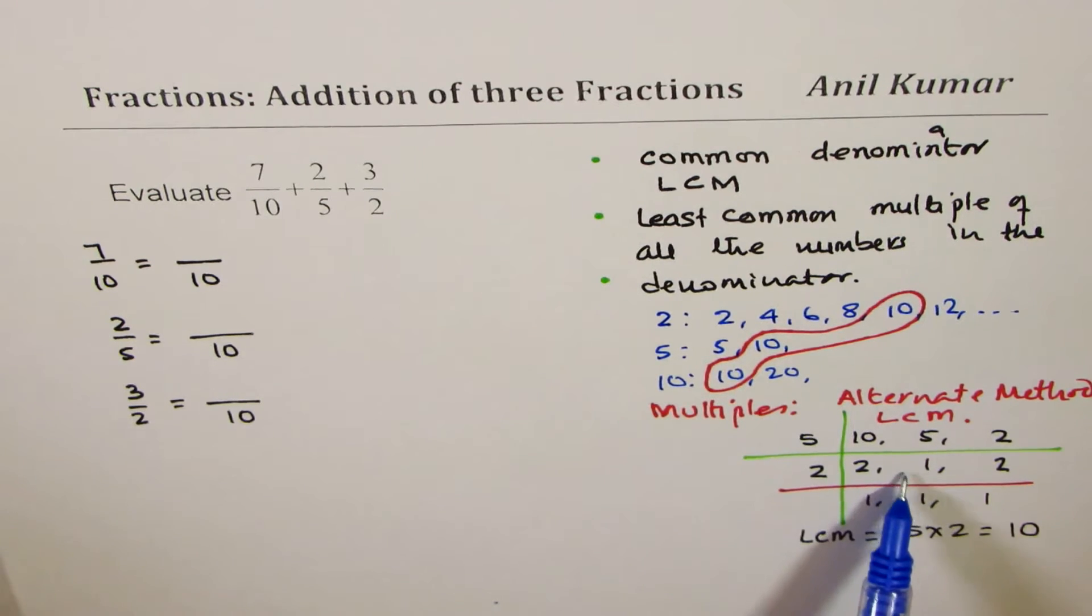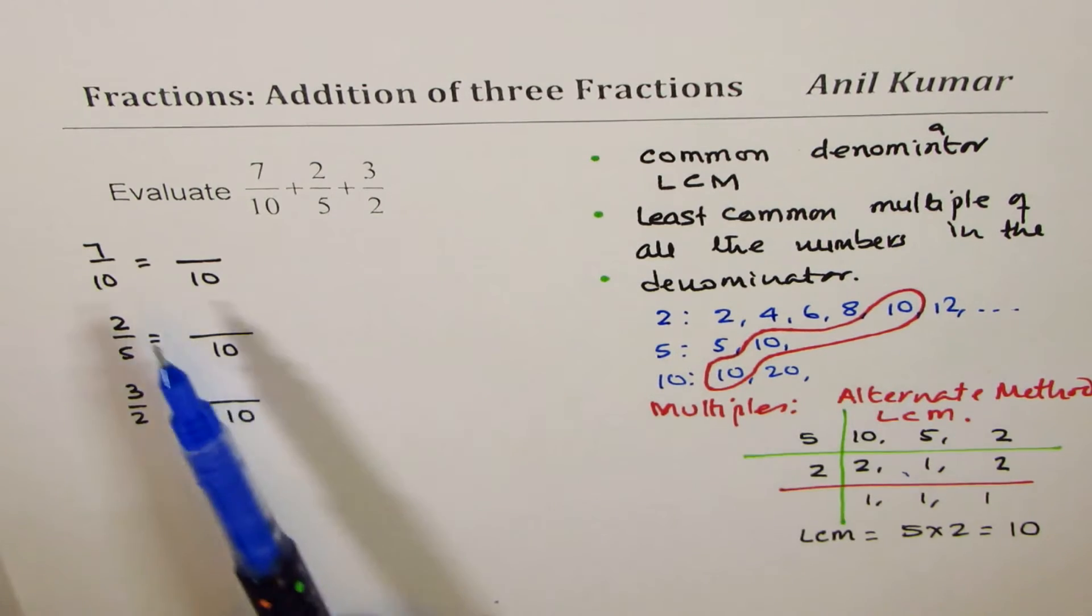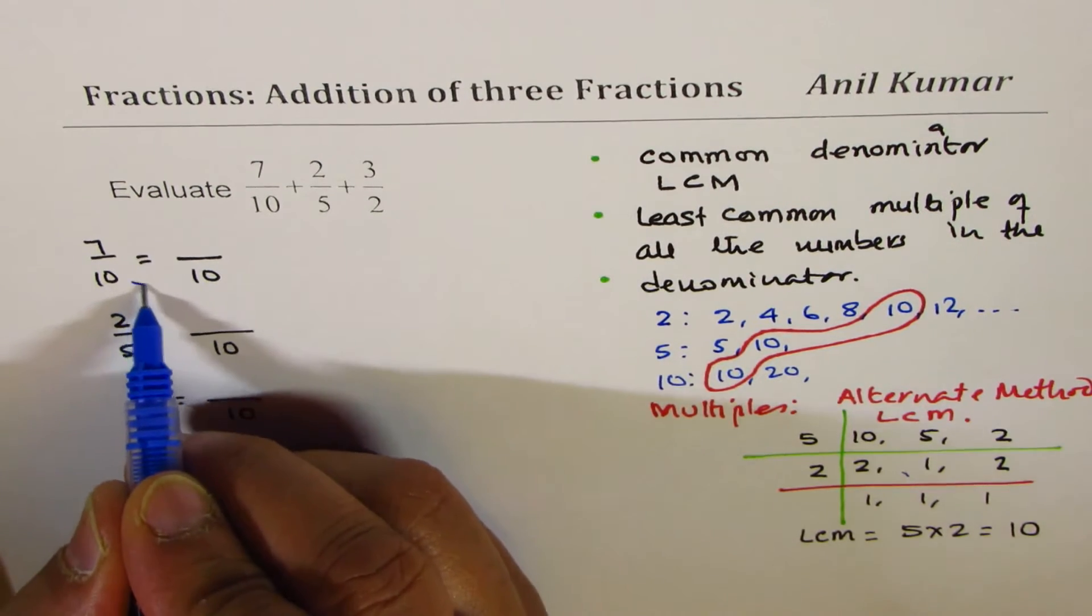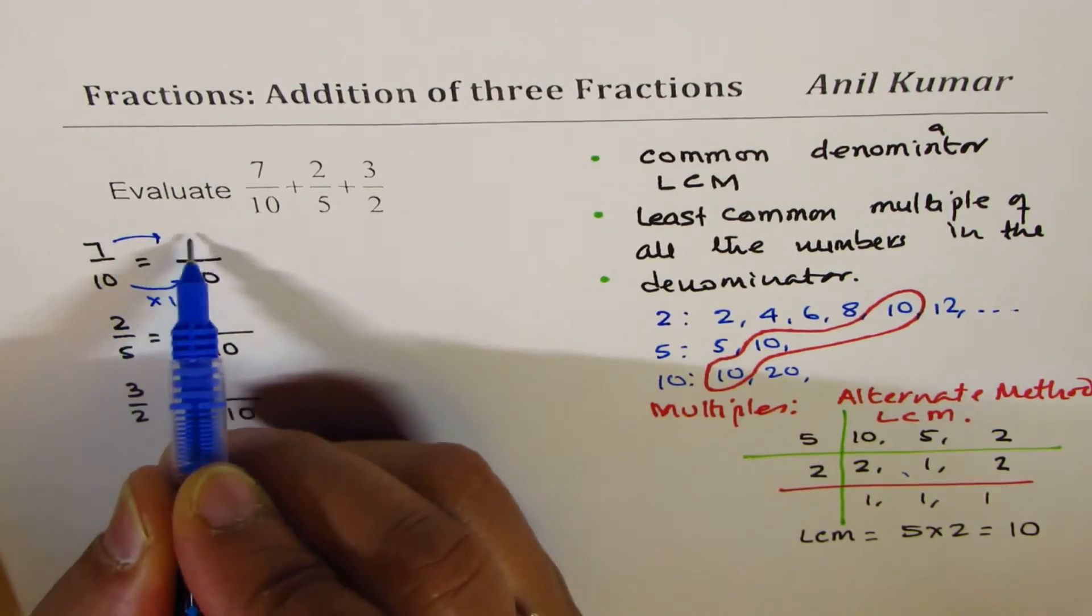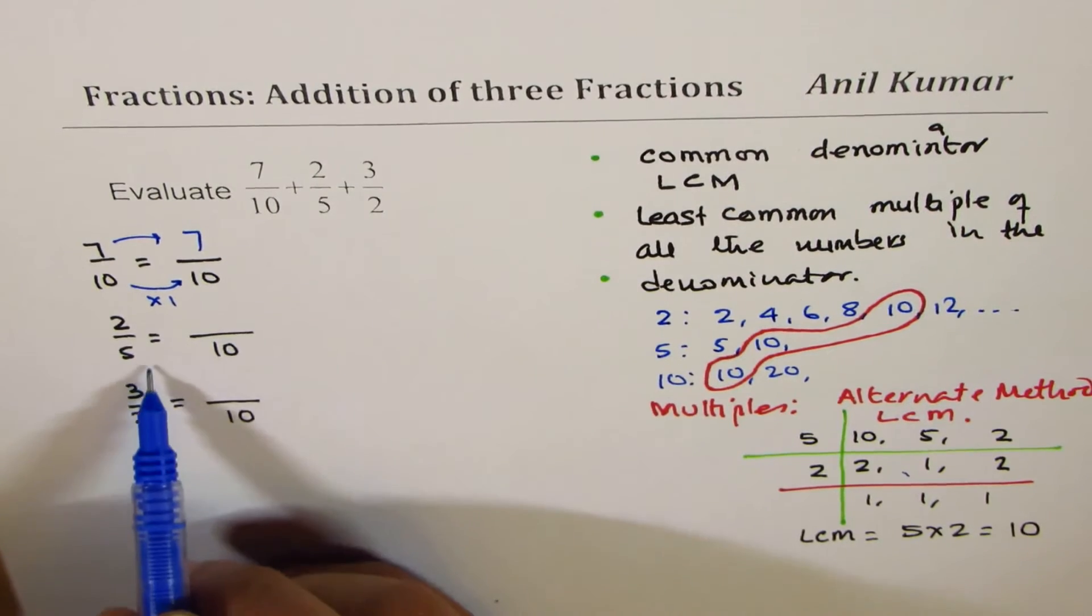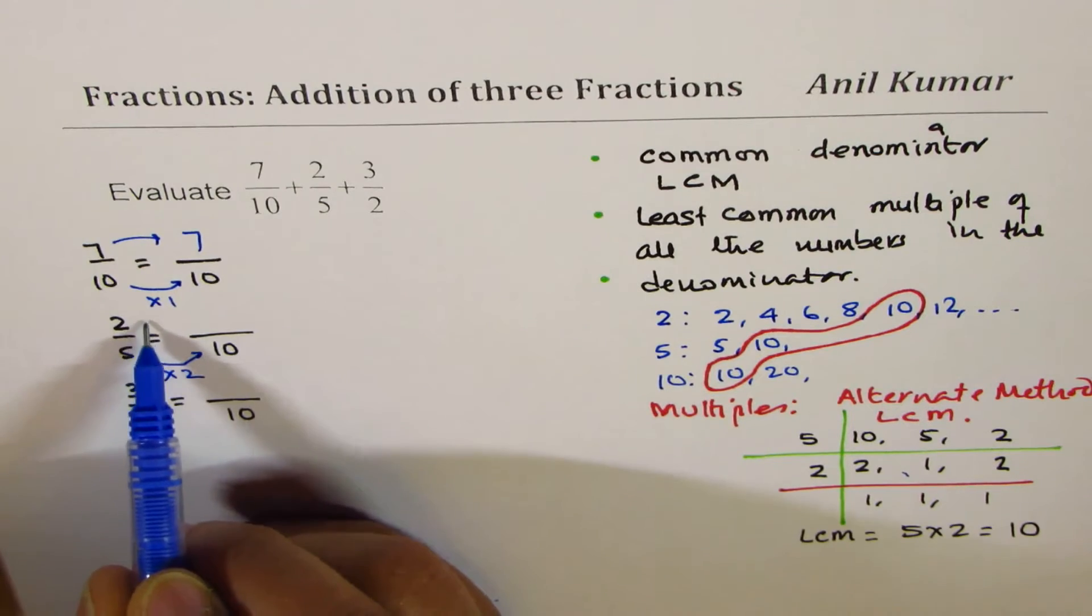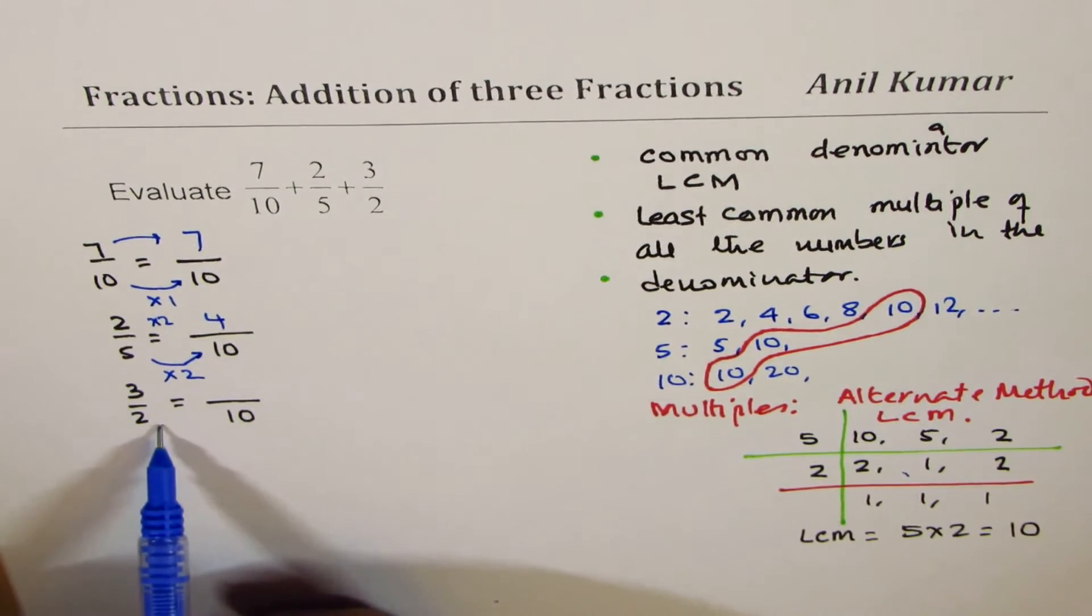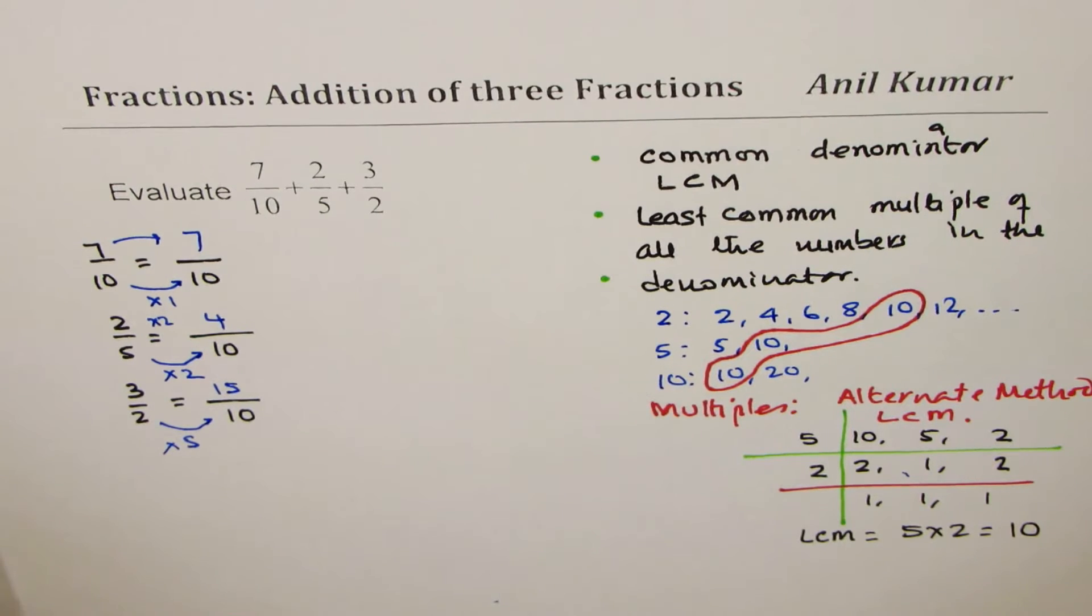Now once we know that 10 is our least common denominator, how do we get 10? In this particular case, to get to 10 we just have to multiply by 1. 10 is already there, so we get 7 here. Here to get to 10 we have to multiply by 2, so we get 2 times 2 as 4. Here to get to 10 we have to multiply by 5, so 5 times 3 is 15. Now we know the combination.